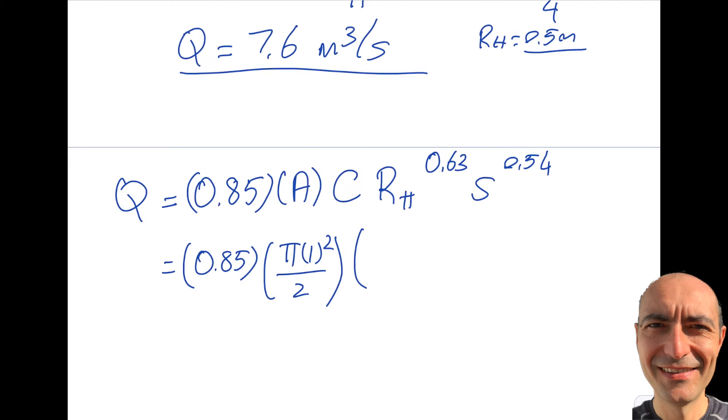0.85. A is the same, πR²/2. Note that I'm using proper radius of the cross section. C - I mentioned when reviewing, it's typically from 100 to 150. For concrete, it's typically 130 because it's smooth. The smoother it is, the higher the value. Times the R_H, 0.5 to the power of 0.63, 0.01 to the power of 0.54.